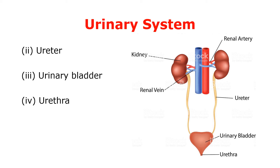As you can see in this diagram of the urinary system, the ureter starts from the kidney and carries urine to the urinary bladder. The ureter is made up of three layers: the outer fibrous layer, a middle muscular layer, and an inner mucus layer.